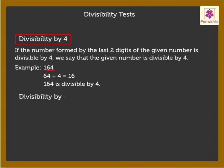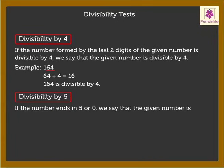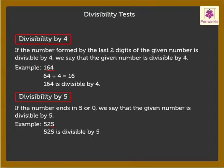Divisibility by 5: If the number ends in 5 or 0, we say that the given number is divisible by 5. For example, 525 ends in 5. Thus, it is divisible by 5. Look at another example: 330 ends in 0. Hence, it is also divisible by 5.